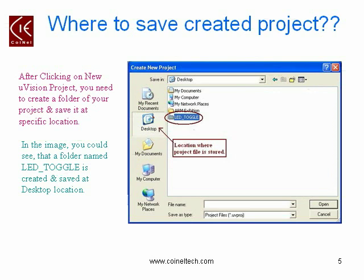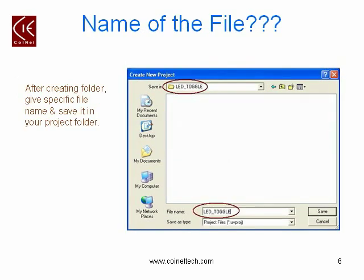To enter into your LED toggle folder, click on the Open button. When you click on Open, you enter into the LED toggle folder. Here you need to specify a file name for your project. In the file name edit box, you can observe we have written led_toggle as the file name of the project. Then click on the Save button.